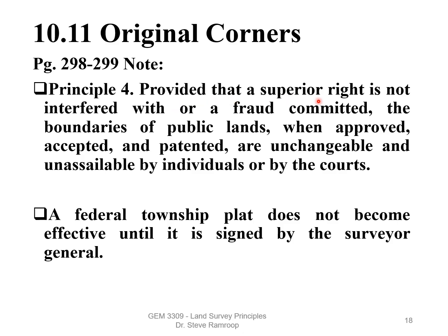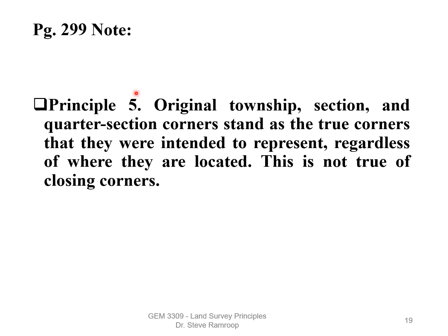Original Corners. The same principle applies — assuming everything went as planned and followed instructions, then the original corner should have all the evidence associated with it available to find. A federal township plat does not become effective until it is signed by the Surveyor-General. Principle 5: Original township, section, and quarter-section corners stand as true corners as they were intended to represent, regardless of where they were located. This is not true of closing corners — closing corners are corners that close off on the township line.